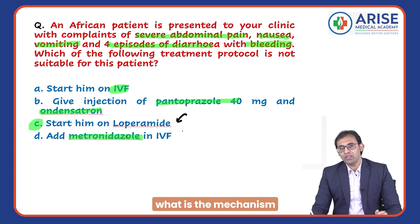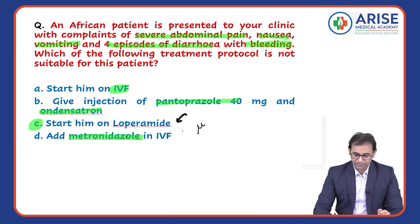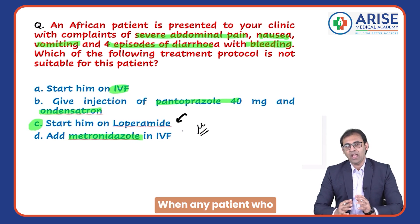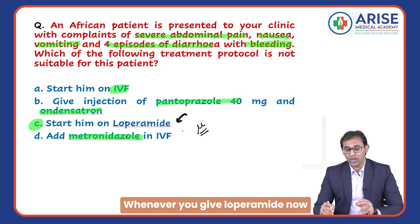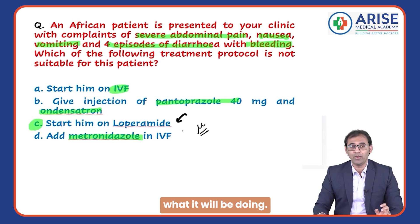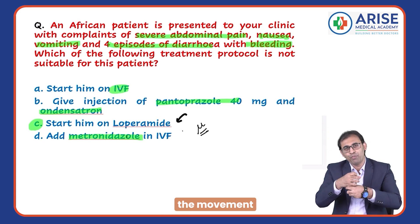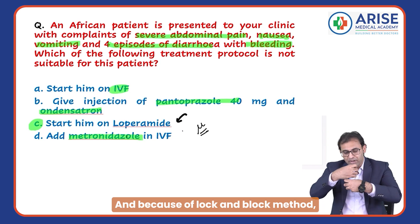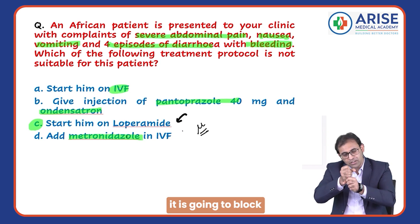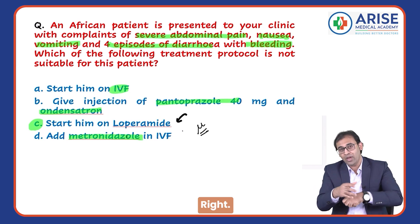Why is loperamide not suitable? First, what is the mechanism of action of loperamide? It is a mu-opioid agonist. When any patient is having watery or secretory diarrhea, loperamide induces contraction in the large intestine and by a lock-and-block method, it blocks the outflow of stool.